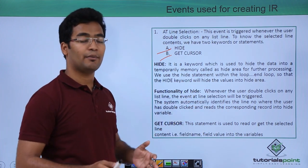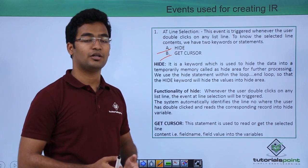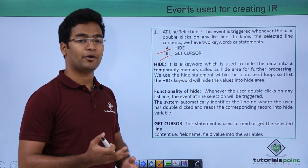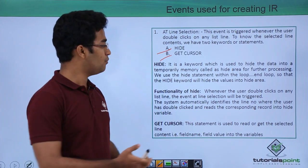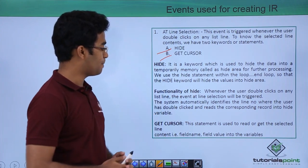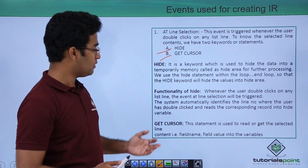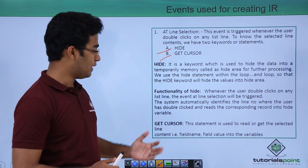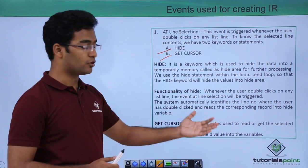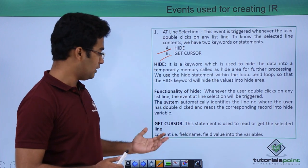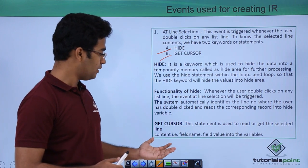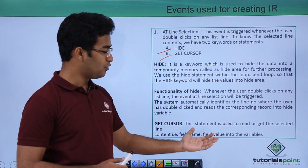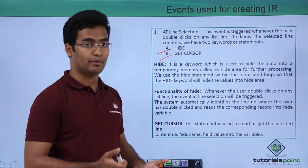We can apply a loop or some other processing to process the data in the hide area. The GET CURSOR statement is used to read or get the selected line content — that is, the field name and field value — into variables.